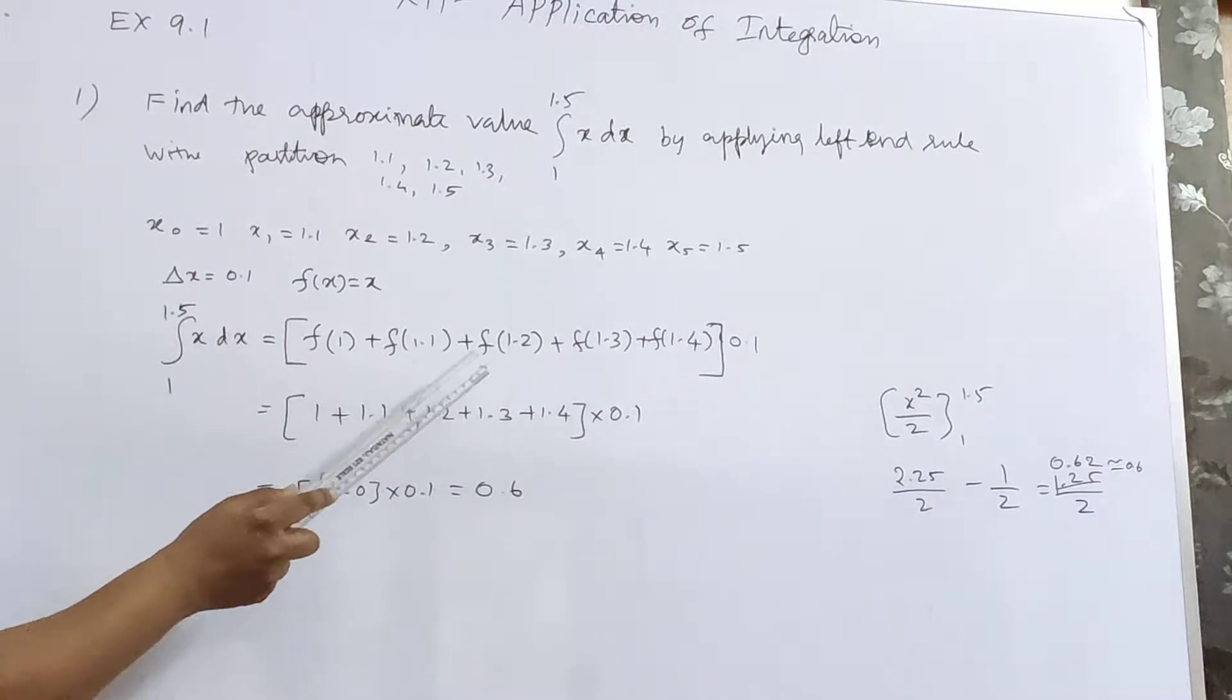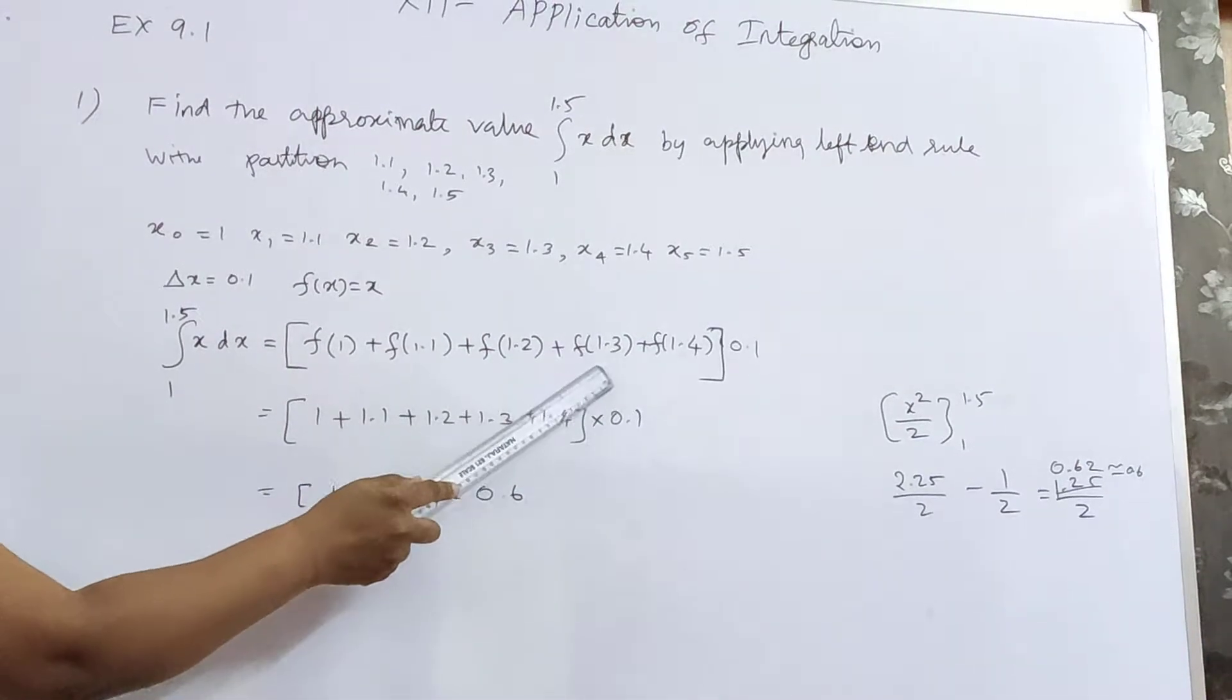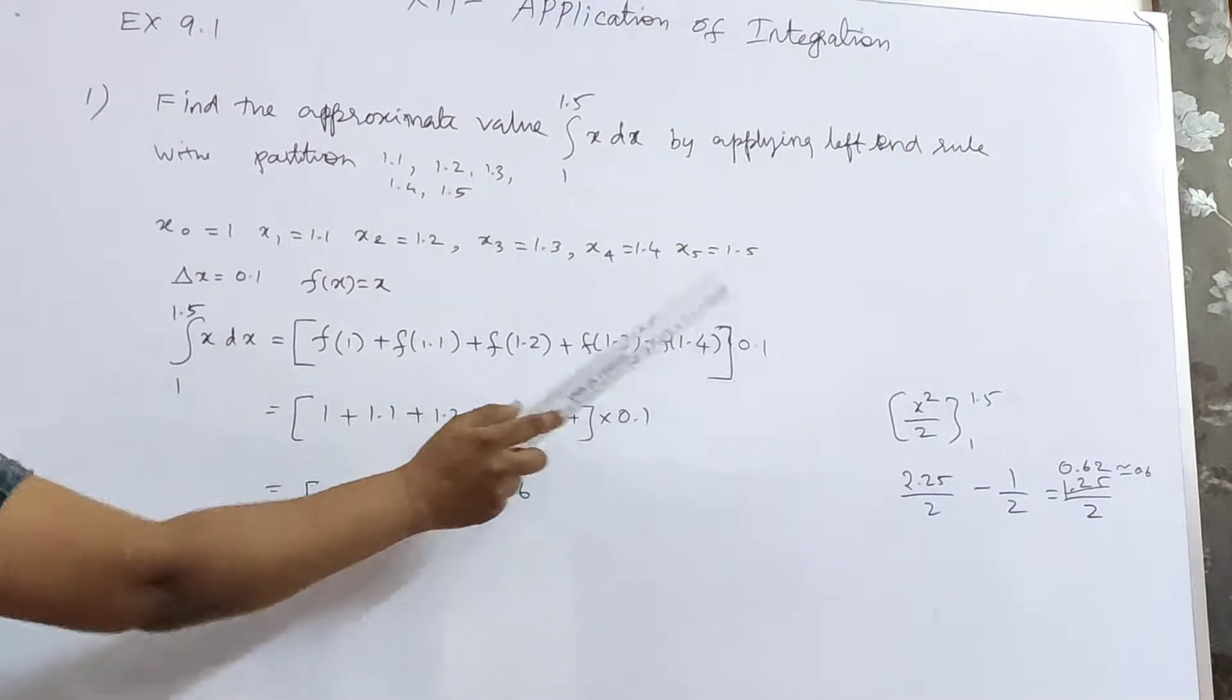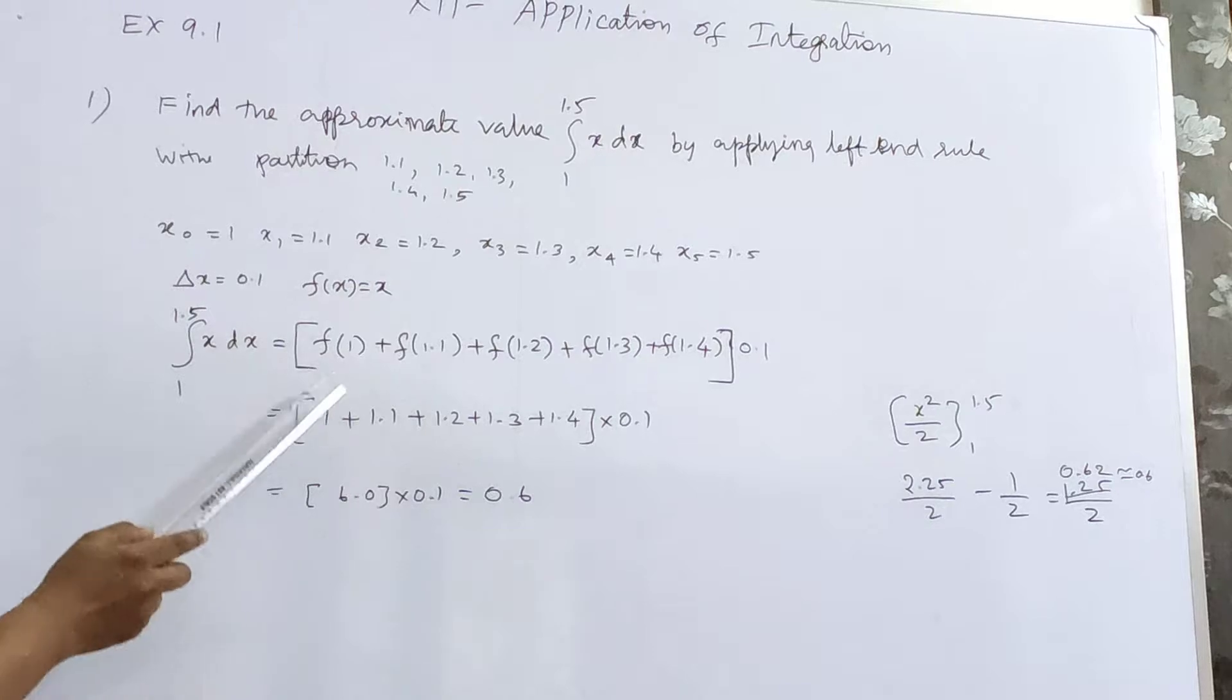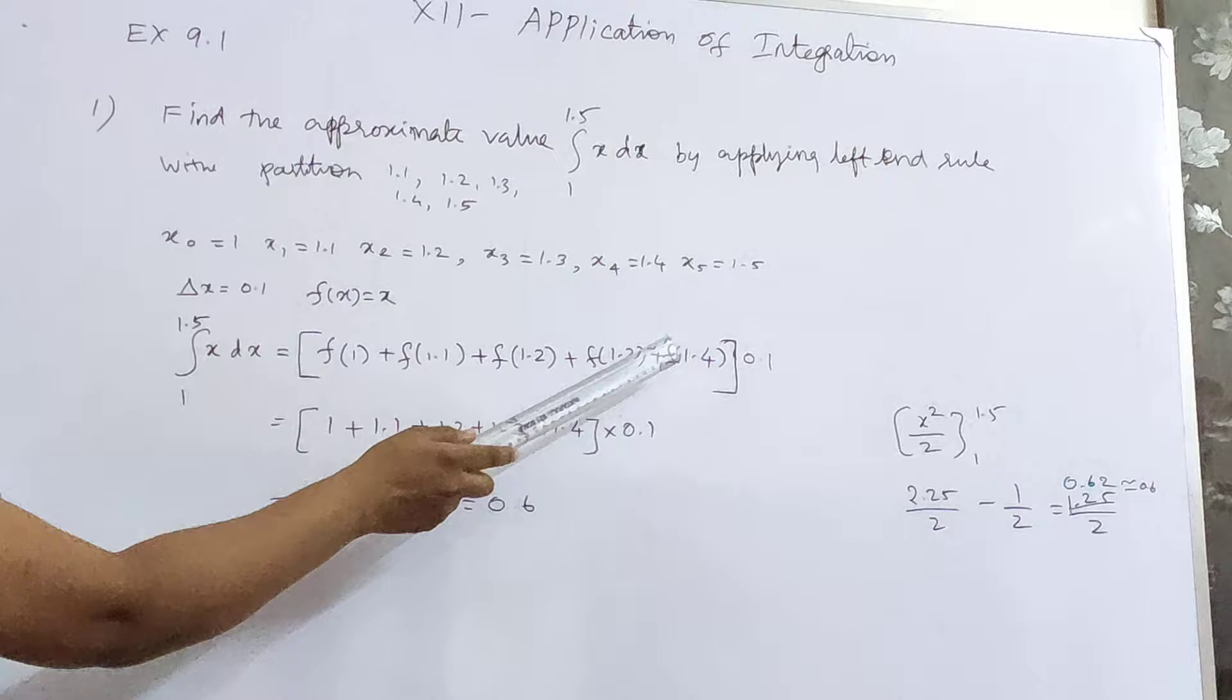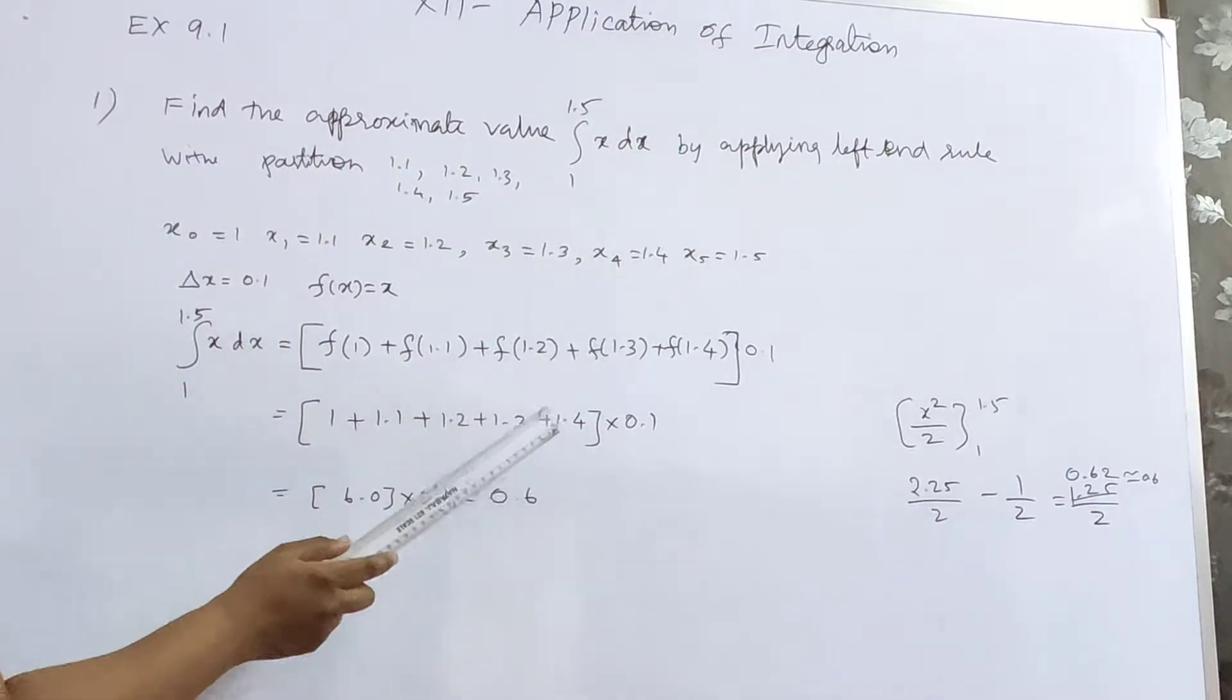So f of 1 plus f of 1.1 plus f of 1.2 plus f of 1.3 plus f of 1.4 into delta x 0.1. The formula is f of x0 plus f of x1 plus f of x2 plus f of x3 plus f of x4 into delta x.